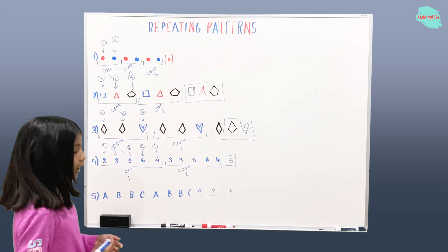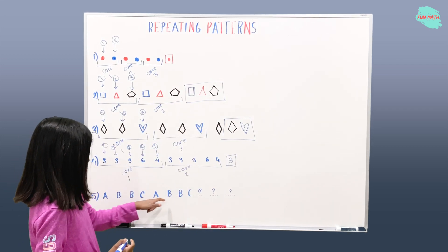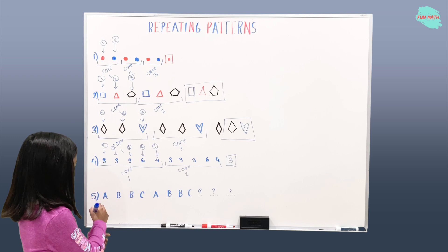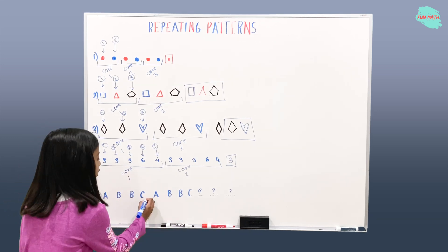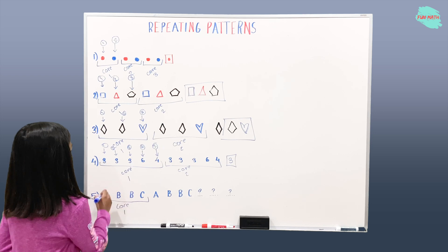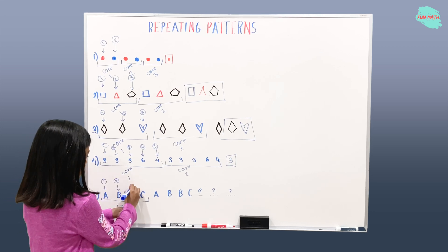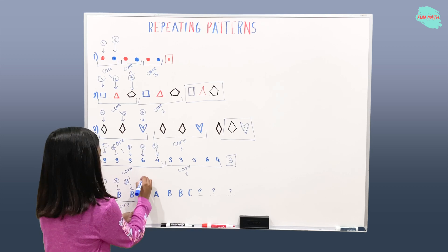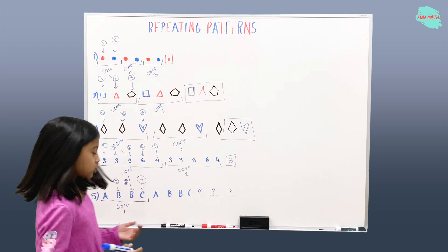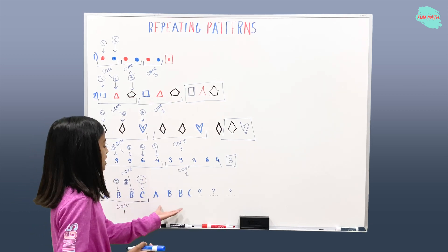Let's solve example five. What is the core? There's A, B, B, C, A, B, B, C — that's the pattern. The core is A, B, B, C, and it starts repeating again. So A is step one, B is step two, B again is step three, and C is step four — we have four steps. Here there's A and A again, B, B, C, C — so this is core two.